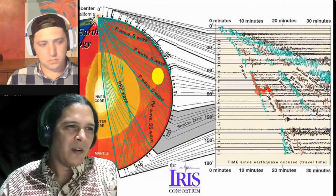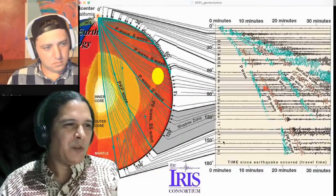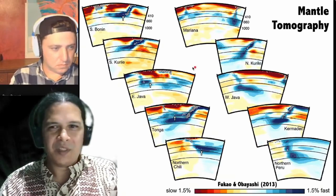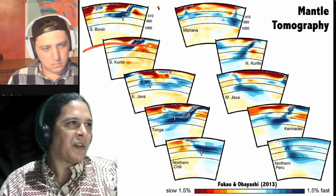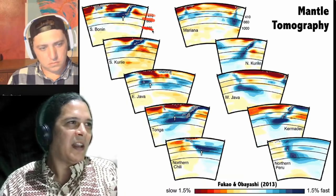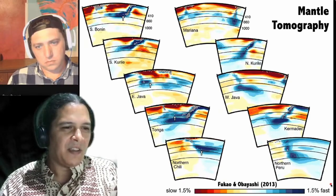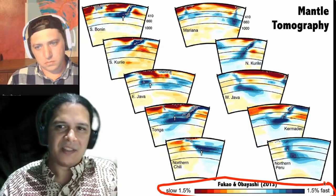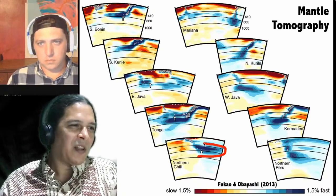Mapping those arrival-time differences is called mantle tomography. What you see here is a series of slices from the outer-core boundary of the earth up to the surface, with depth shown on the right at 410 km, 660 km, and 1,000 km. The color axis at the bottom runs from 1.5% slow to 1.5% fast — blue is 1.5% faster and red is 1.5% slower.